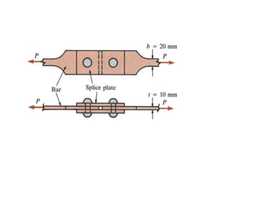One splice plate on the top and one on the bottom, and we are using two rivets. The diameter of the rivet is 15 mm. The ultimate tensile strength of the plate is 400 MPa, and the shear ultimate for the rivet is given as 180 MPa.